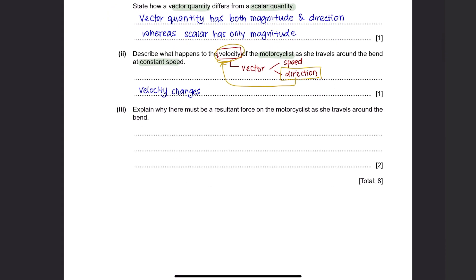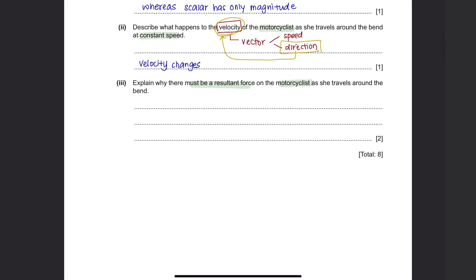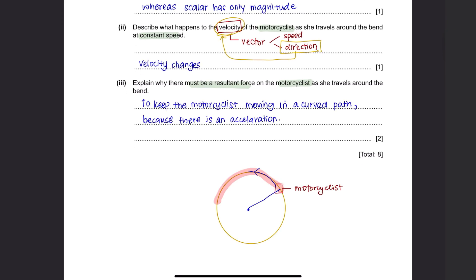Part C: Explain why there must be a resultant force on the motorcyclist as she travels around the bend. Since there is an acceleration, we want to ensure that instead of the motorcyclist moving in a forward direction, there is a force acting inward to ensure the motorcyclist remains in a curved path.